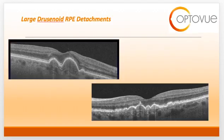This slide shows larger drusenoid PEDs. Note that the width and height differ from the previous slide. Once they get this large, you start to worry about the development of choroidal neovascular membrane and advanced AMD.